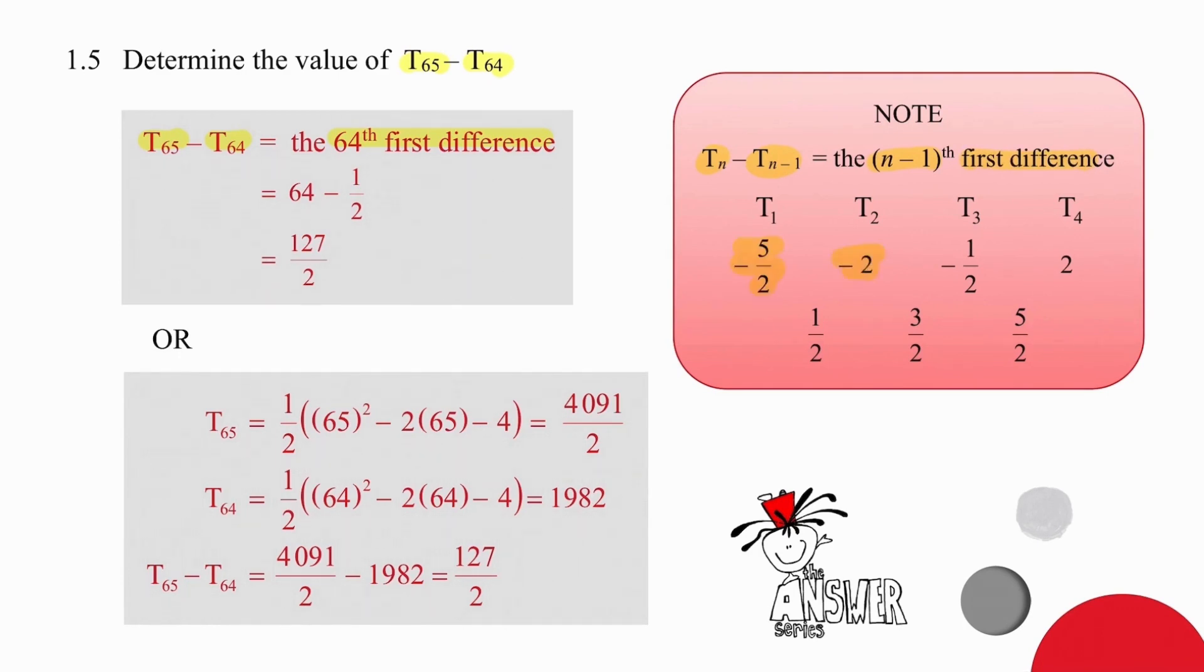So in summary, if we take the second term and subtract the first term, we are getting the first difference in the first difference row. If we take the third term and subtract the second term, we are getting the second first difference. And one more time, if we take the fourth term and subtract the third term, we are getting the third first difference.